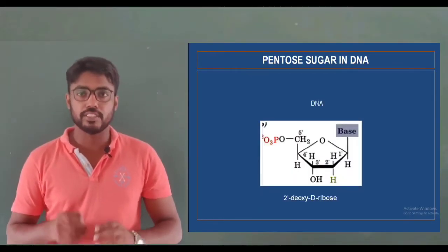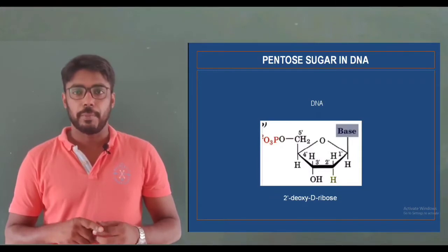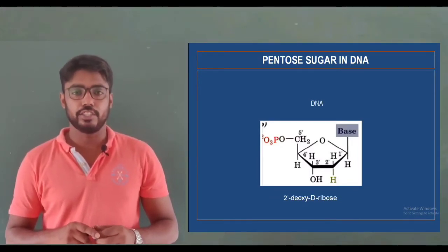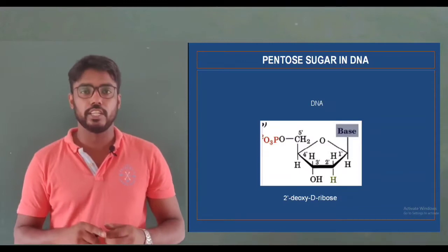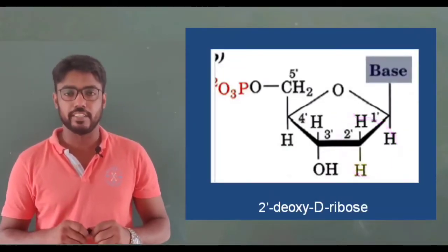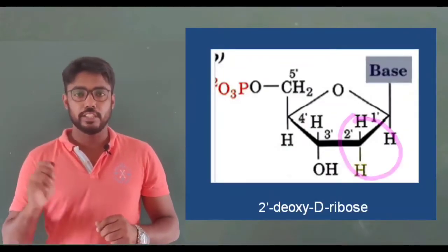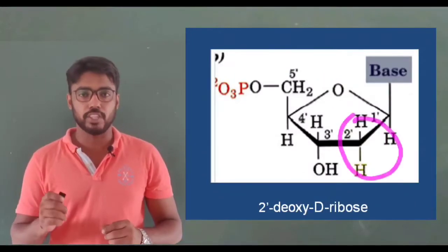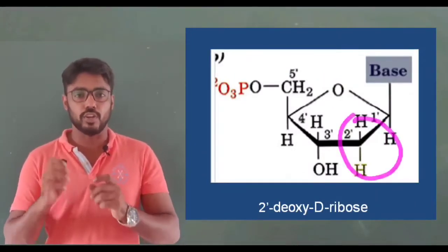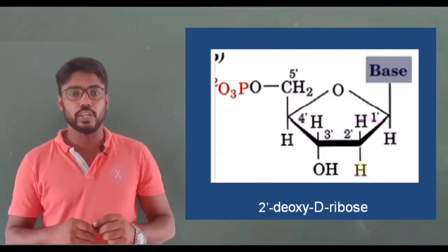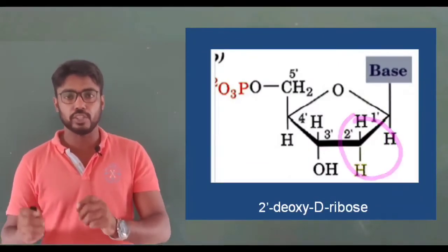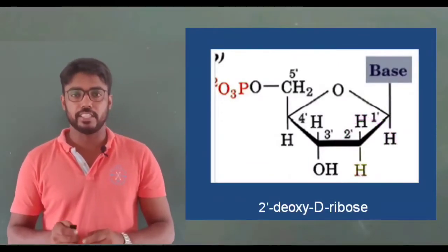The next component is the pentose sugar. In DNA, 2-deoxyribose is the pentose sugar present inside. In this pentose sugar, the hydroxyl group at the second position is removed. That's why it is called 2-deoxyribose. This is the pentose sugar present in the DNA.